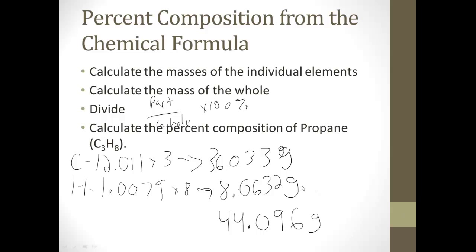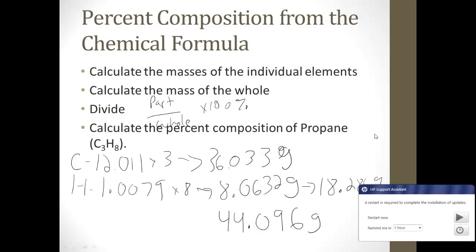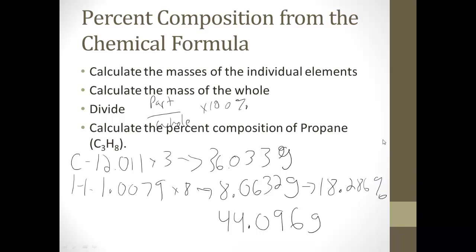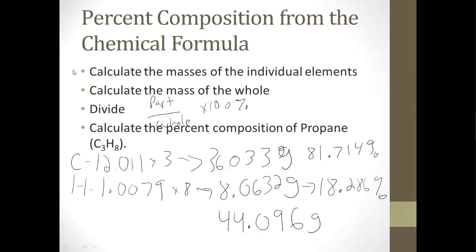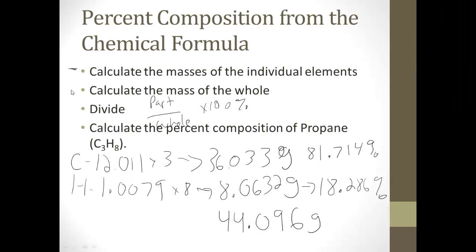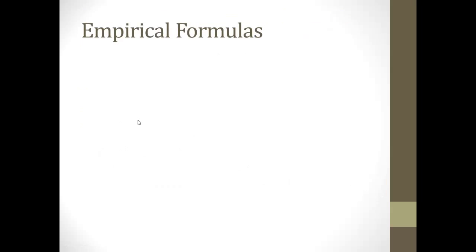8.0632 divided by 44.096, which is going to give me 18.286 percent. And the carbon is going to be the rest. Or I can just plug it in and say 36.033 divided by 44.096 equals 81.714 percent. It's a real simple process. The important thing is remembering the steps. Calculate the mass of the individual elements, calculate the mass of the whole, and then divide by using that formula. The first two steps you've been doing a lot.